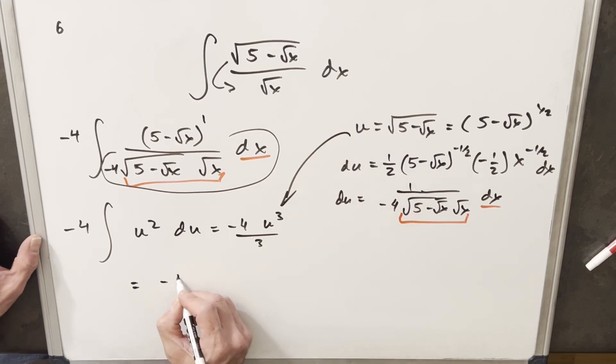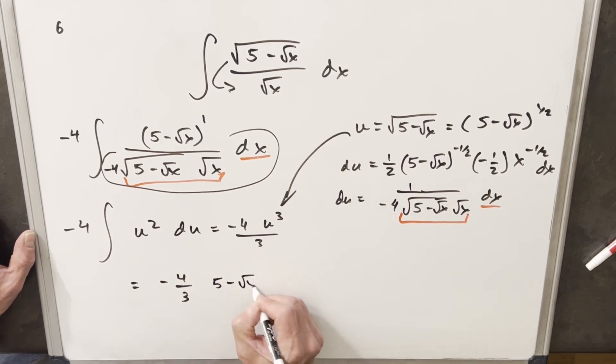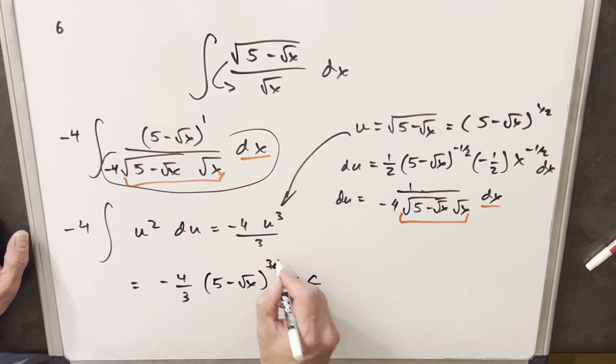So for our solution, we're going to have minus four over three. Because we have a square root to the third power, I'm going to write this as five minus square root of x to the three halves power plus c. And that's it.